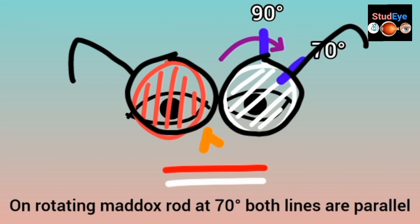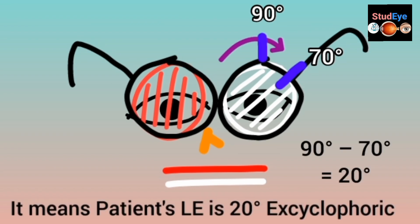The Maddox rod started at 90 degrees on the trial frame and was rotated to 70 degrees, at which point both lines became parallel. To calculate the degree of torsional deviation, subtract: 90 degrees minus 70 degrees equals 20 degrees. This means the patient has left eye excyclophoria of 20 degrees — corresponding to the eye in which you rotated the Maddox rod.